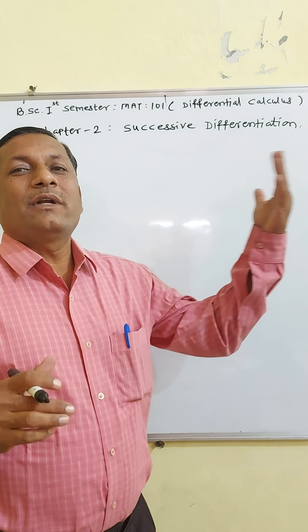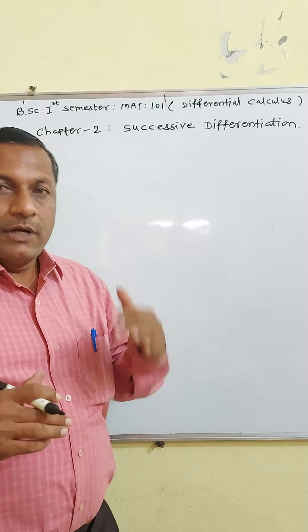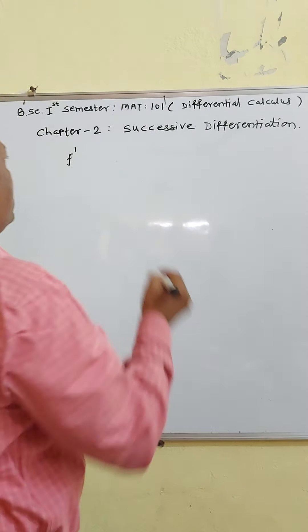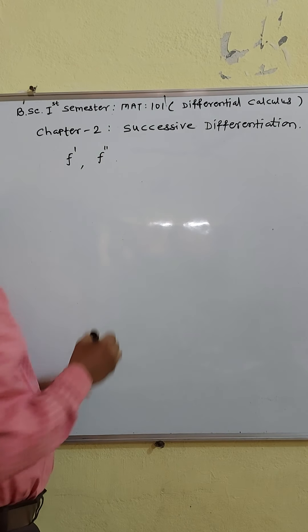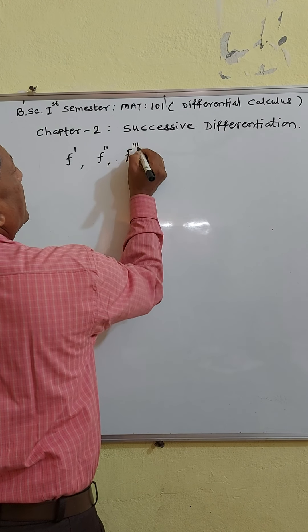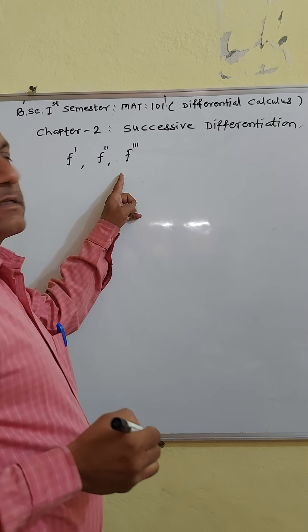Now we will learn successive differentiation, or successive derivative. Suppose f is a function, then the derivative of f is denoted by f dash. f double dash is the derivative of f dash, and f triple dash is the derivative of f double dash. Each succeeding derivative is the derivative of the preceding one. Similarly, the nth derivative of the function is denoted fn(x). These are the successive derivatives of f.